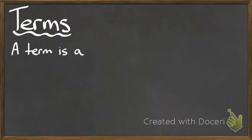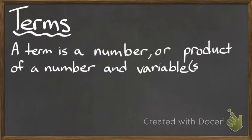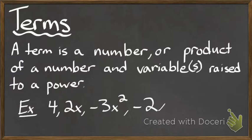What are terms? A term is a number or product of a number and variables, and these variables are raised to a given power. For example, 4 would be an example of a term — you can think of it as 4 times x to the power of 0, and the x part would essentially just become 1 and disappear.